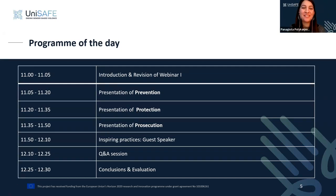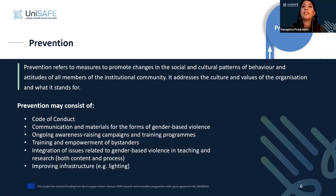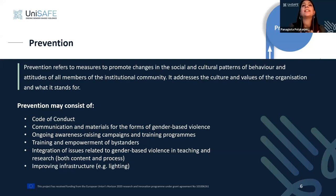Starting with prevention: prevention refers to measures that aim to prevent incidents of gender-based violence from happening in the first place. This involves promoting changes in the way people think and act so that everyone in the academic community can feel safe and respected. In the context of academia, prevention can take different forms — a code of conduct, for example, is a common practice.